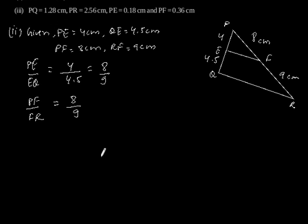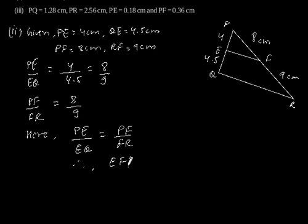So here we can observe that PE by EQ is equal to PF by FR, so we can say EF is parallel to QR. Now the third part.